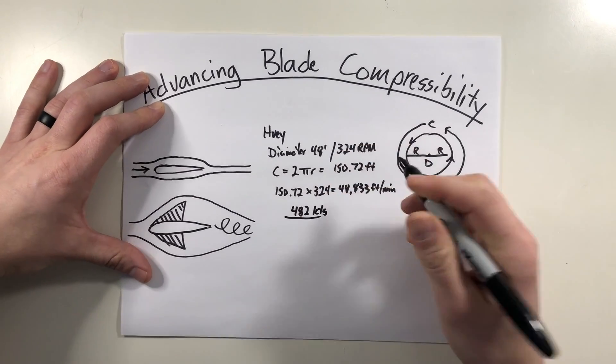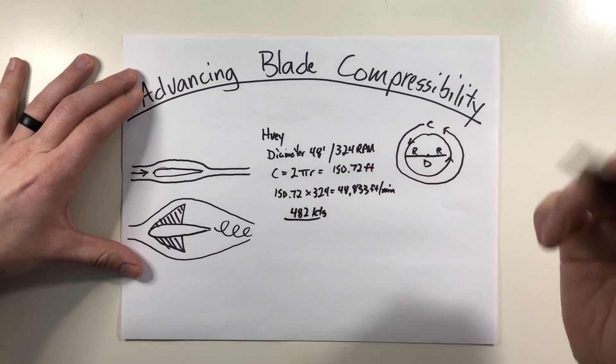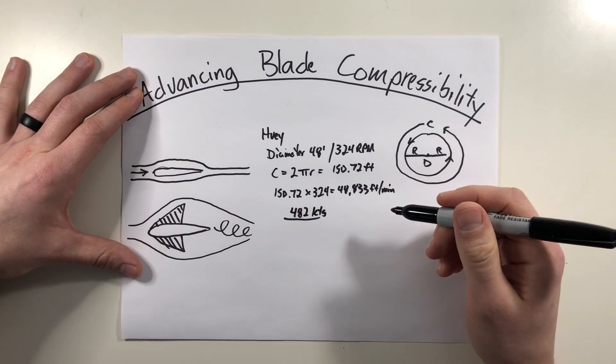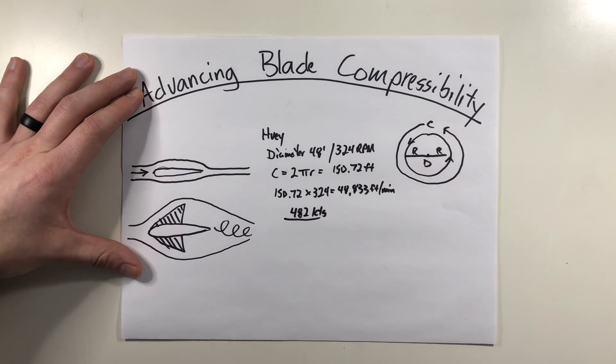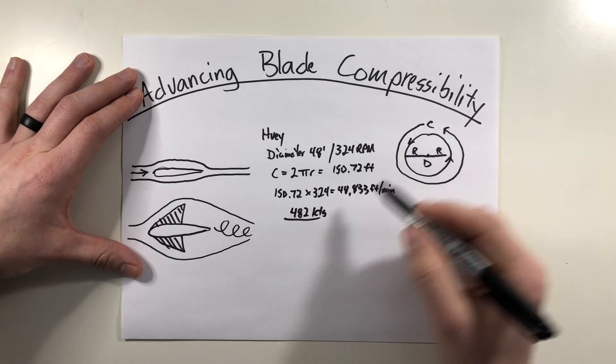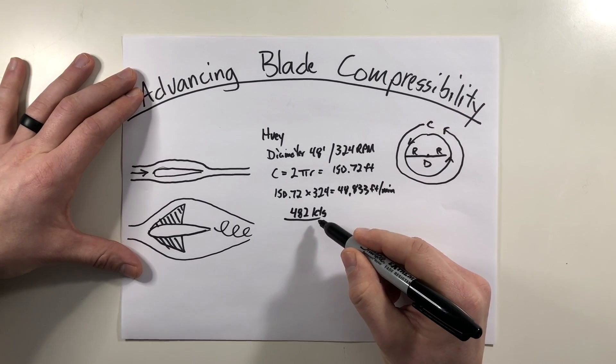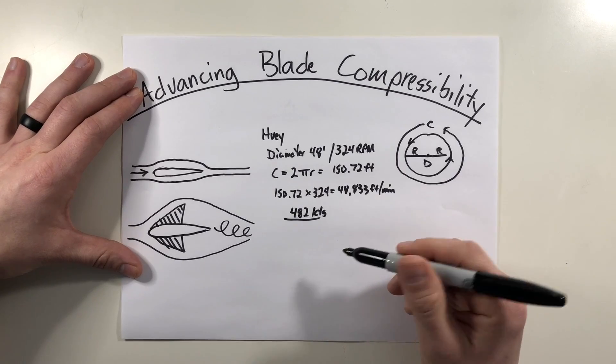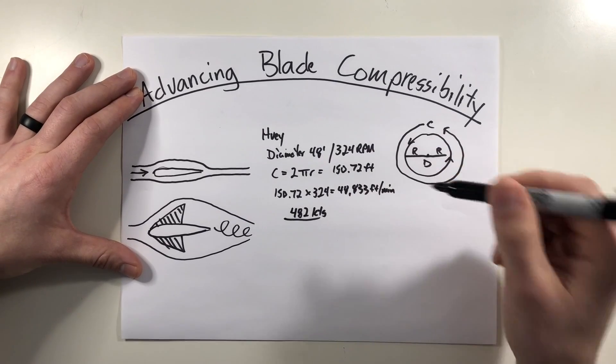Now I just entered this into just a basic calculator. You can go do the math to convert it. But from here, what this tells us is the tip of the blade is traveling around at 482 knots. This means that in a stationary hover the blade tips are traveling this speed.